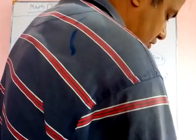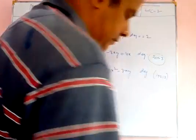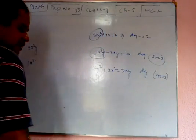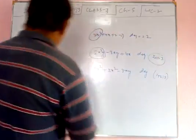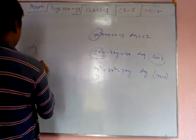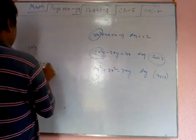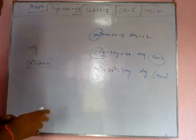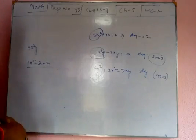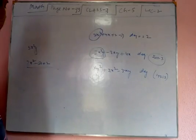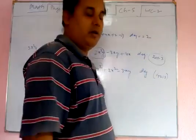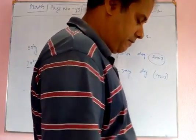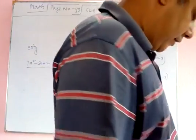Second, 7x² minus 5x plus 2: there are 3 terms, so this is a trinomial. The highest power is 2, so this is a quadratic polynomial.